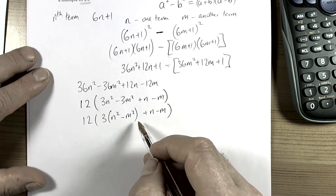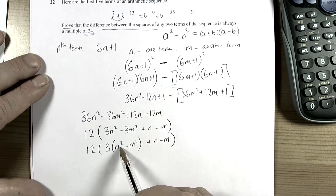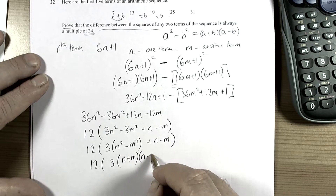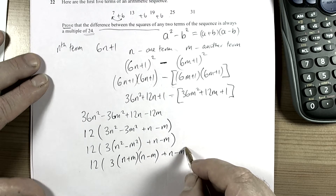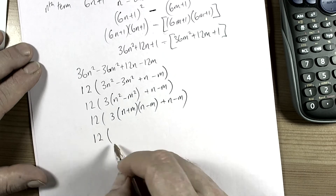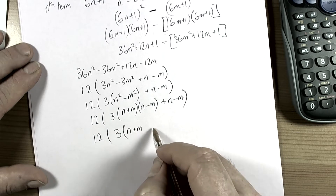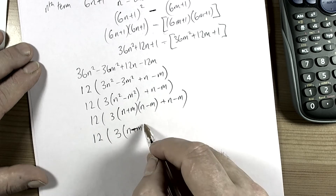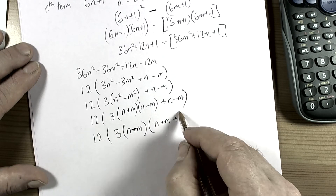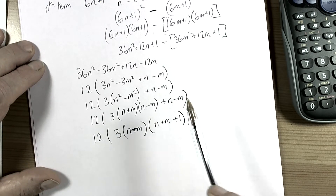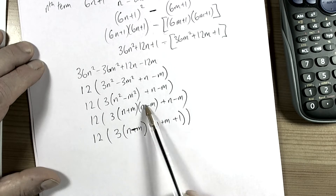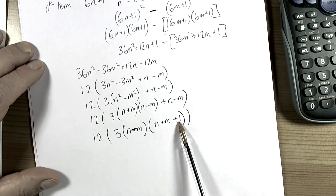From our difference of two squares discussed at the start, we can rewrite this as 12(3(n + m)(n − m) + (n − m)). We then recognise that (n − m) is a common factor in both parts, so we factor it out to get: 12(n − m)(3(n + m) + 1). Dividing each part by (n − m) leaves (n + m) from the first part and +1 from the second.